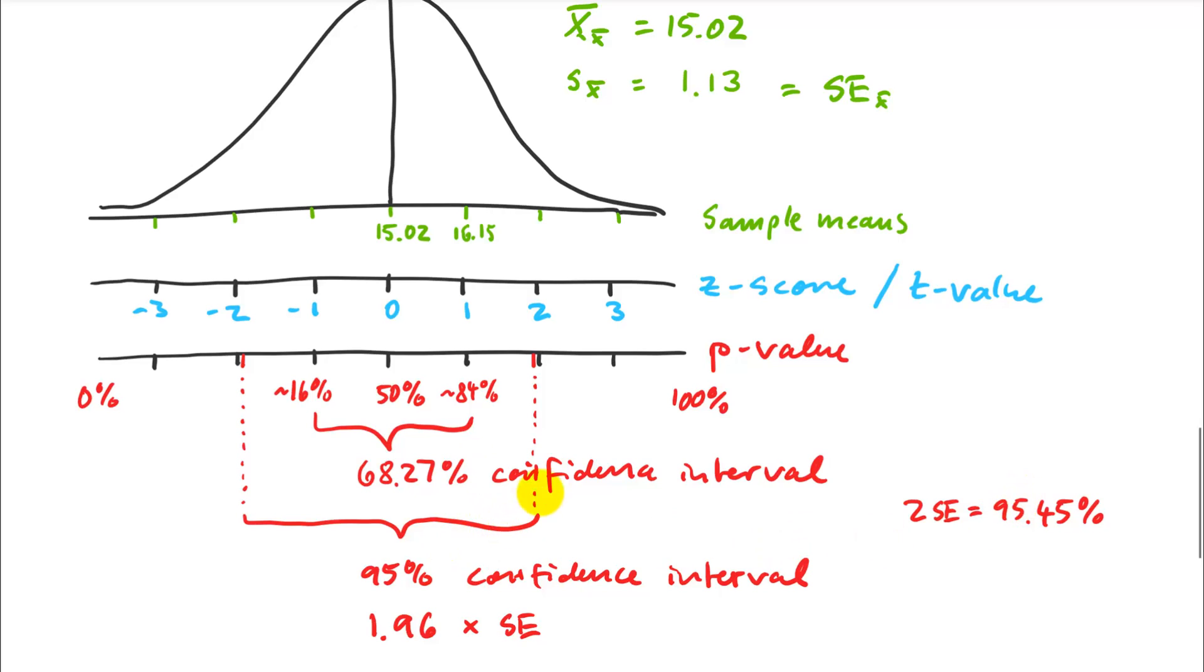So two standard deviations is 95.4 something percent, four or five percent. There it is. If I want an interval where exactly 95% of my means fall within those two values, it's a little less than two standard deviations. And so 1.96.